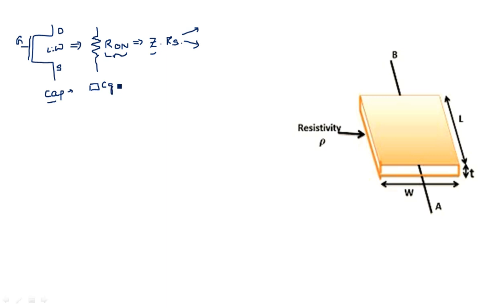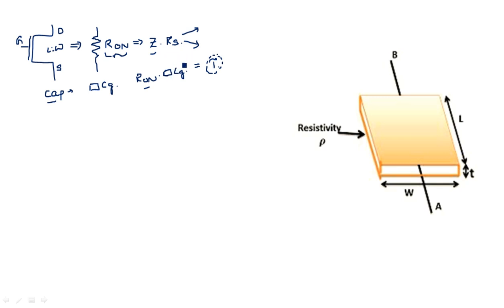Once you calculate R_on, you can also calculate the internal capacitance, called C_G squared. The product R_on × C_G squared gives the time delay τ. This factor determines the amount of time taken by the transistor to complete its operation in whatever circuit it is used in. To find τ we need both capacitance and resistance — that is why we calculate all these parameters under basic circuit concepts.